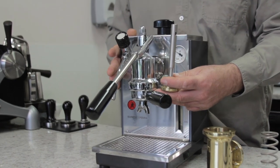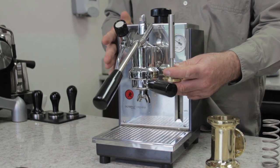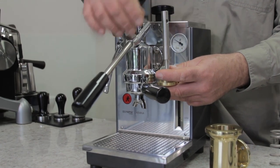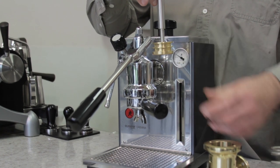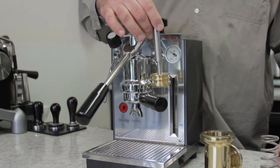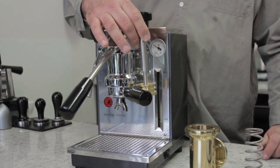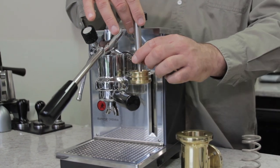On the Olympia Cremina, a model we currently do not sell, we used to sell in the past, when you lift the lever up, it takes the piston up, and then you bring the lever down, and then it basically pushes the piston through the coffee grinds.